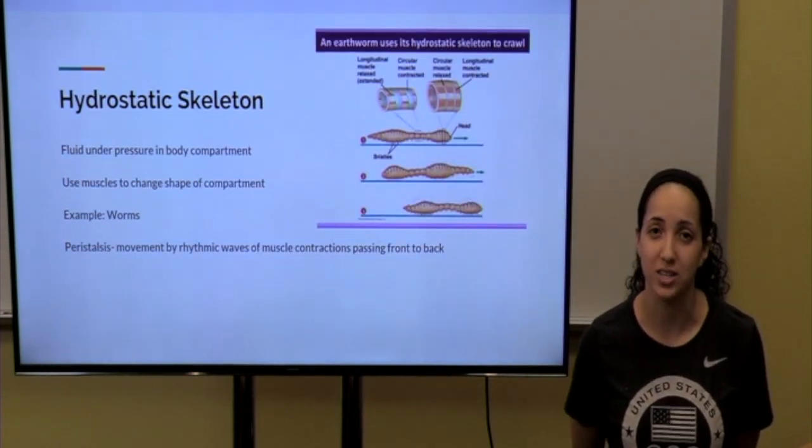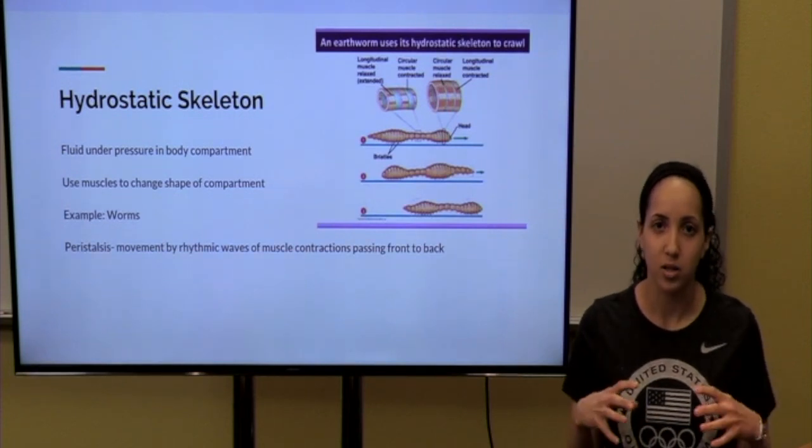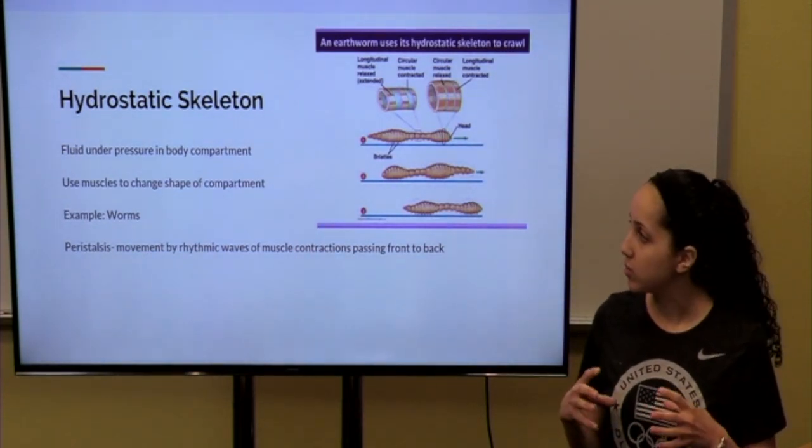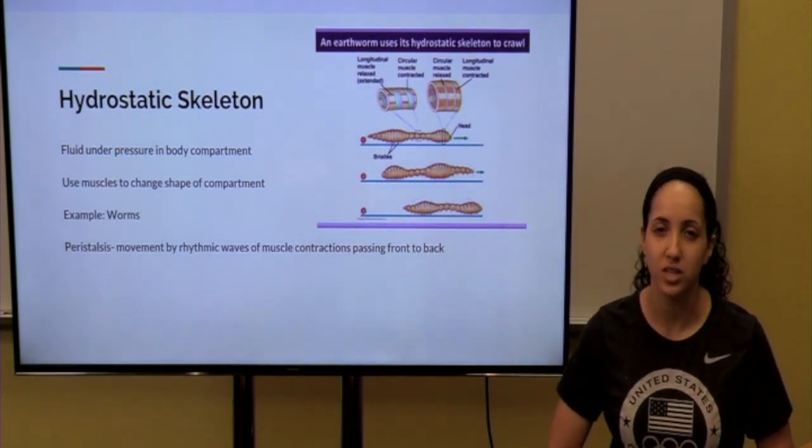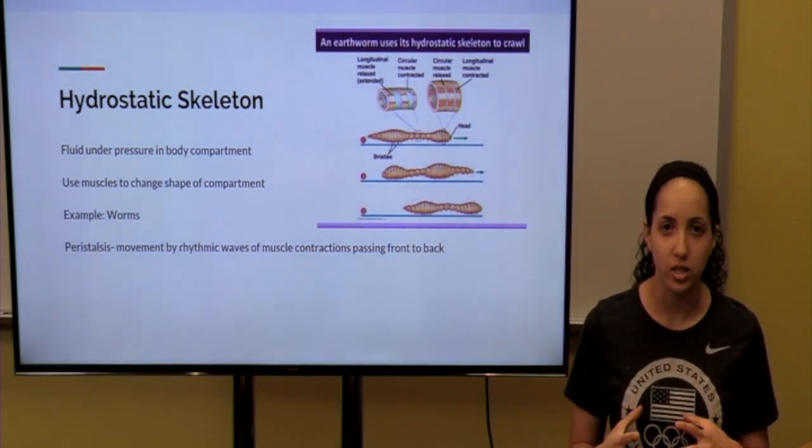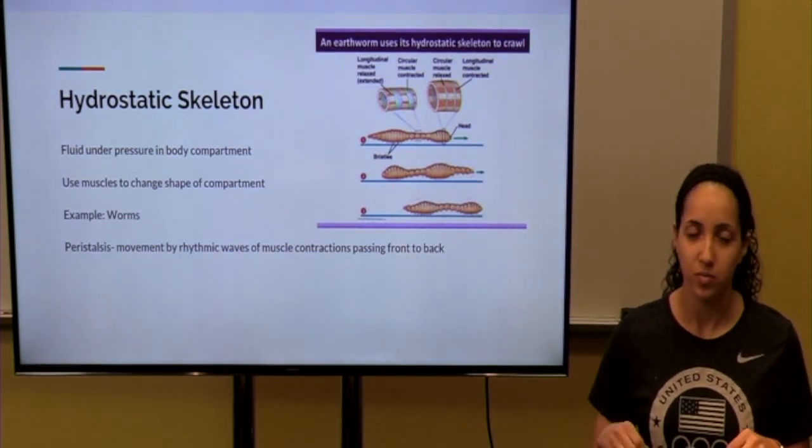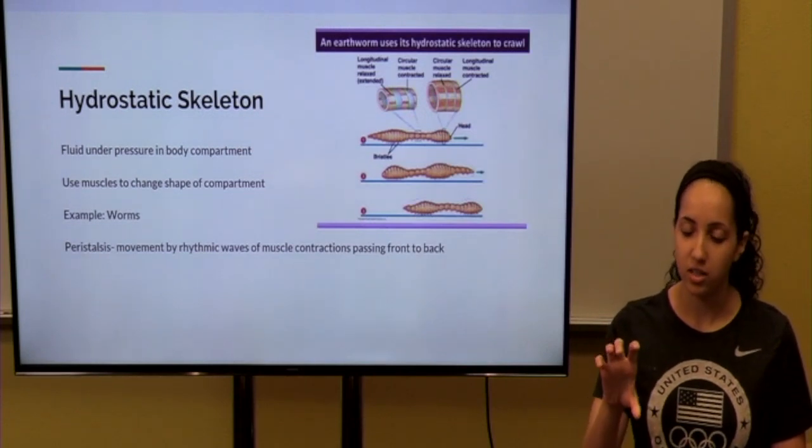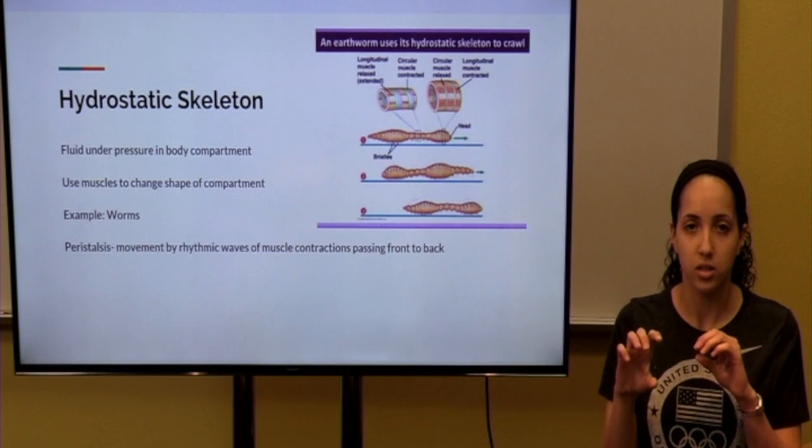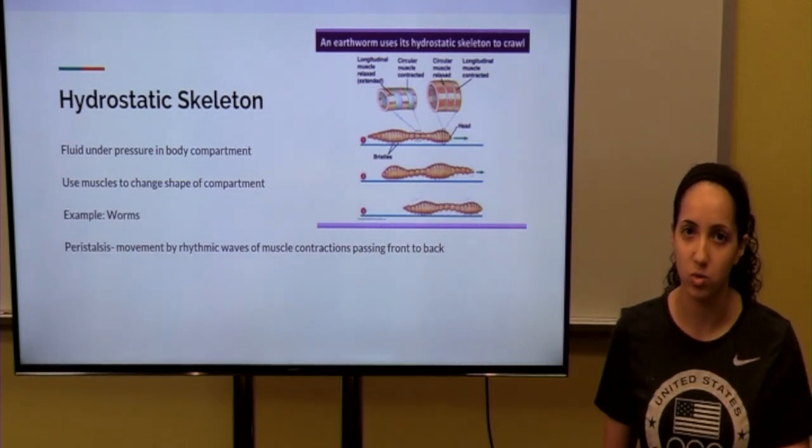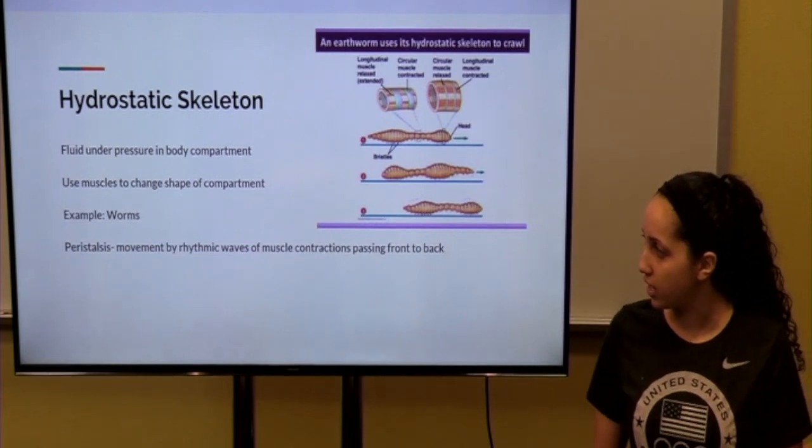The first type we will talk about is hydrostatic. Hydrostatic skeletons are compressed fluid in a compartment. When the muscles change shape, it changes the shape of the compartment. So an example of an animal with a hydrostatic skeleton is a worm. So the hydrostatic skeleton stays static, and then the muscles around it contract and relax, and that causes movement. This type of movement is called peristalsis.